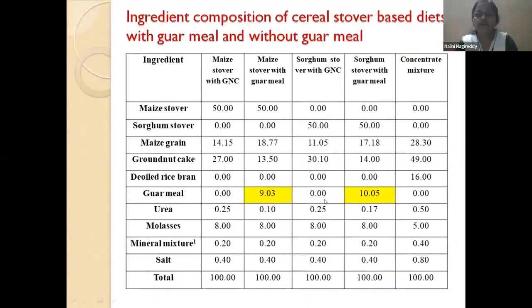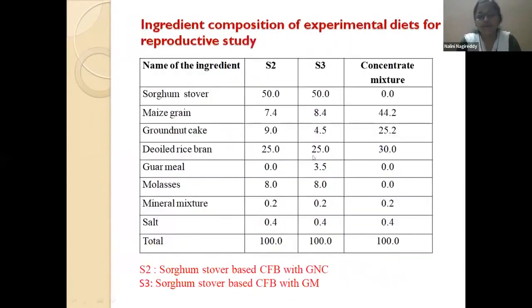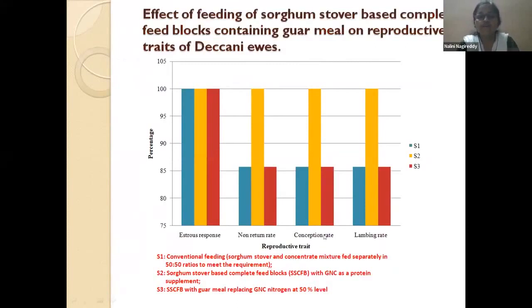We can also include unconventional protein sources in complete diets. In one study, groundnut cake was replaced with guar meal in Nellore-Royam lambs; up to 50% replacement with guar meal gave good growth performance. We also studied the same diets on reproductive performance after lambing — stress response, return rate, conception rate, and lambing rate were all good with groundnut cake, followed by 50% replacement with guar meal.